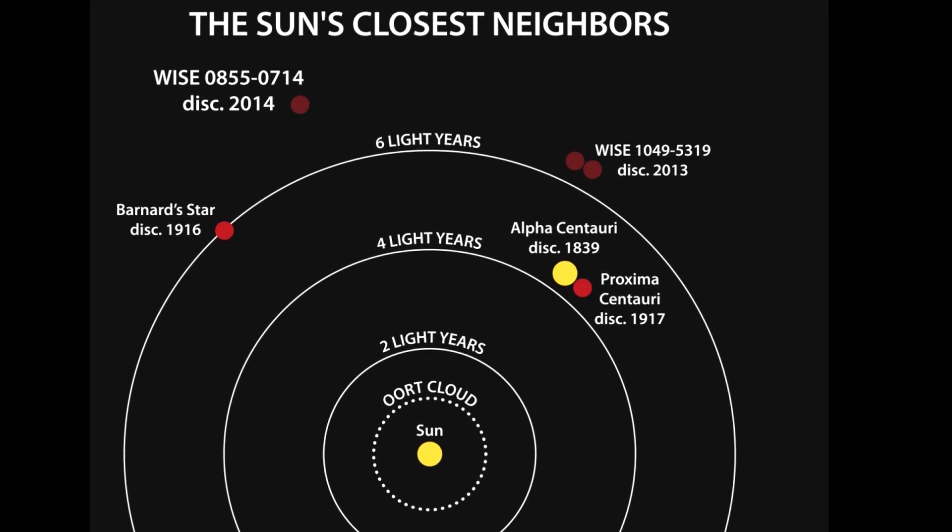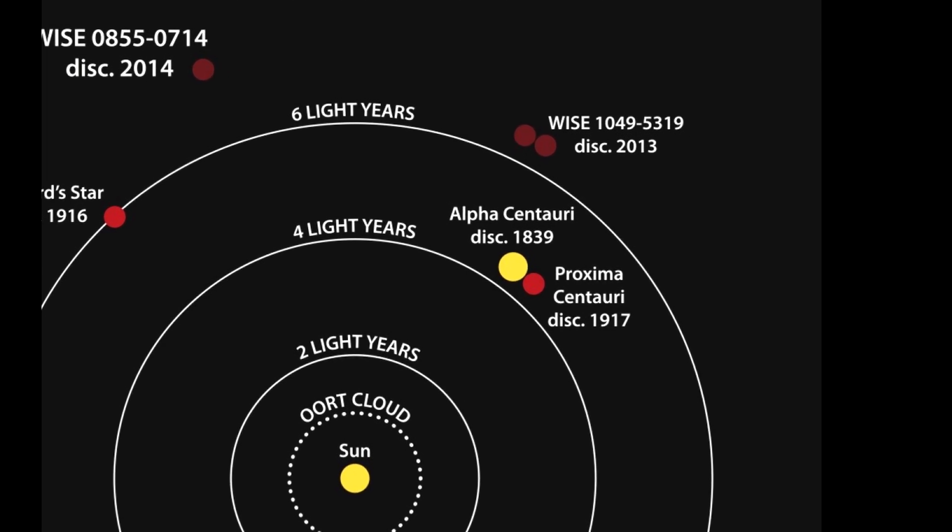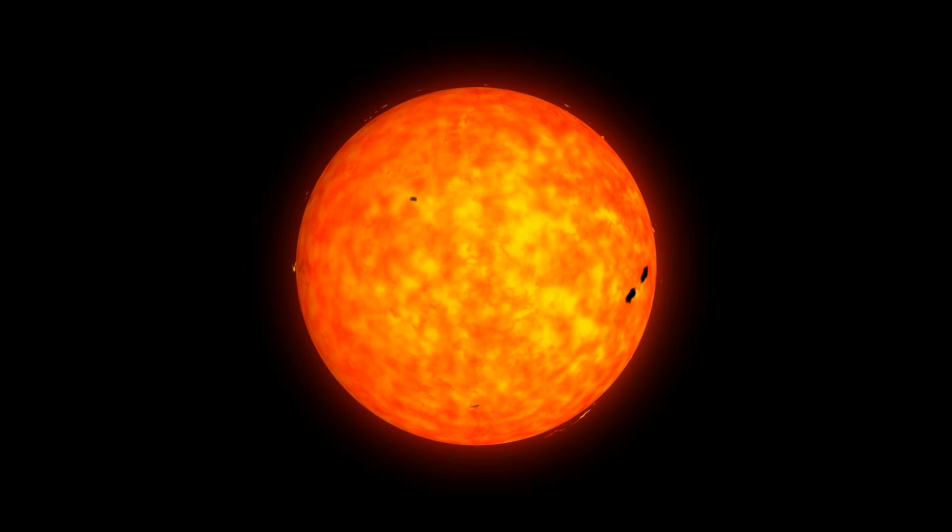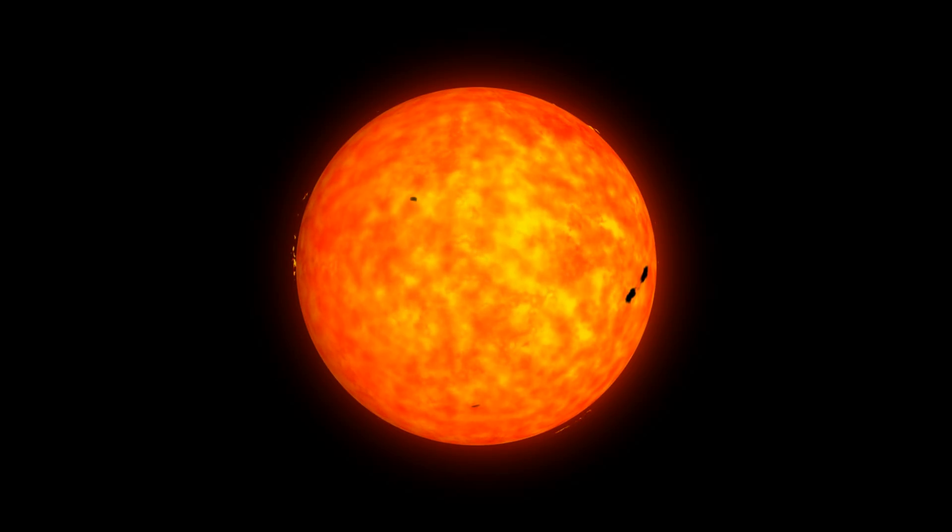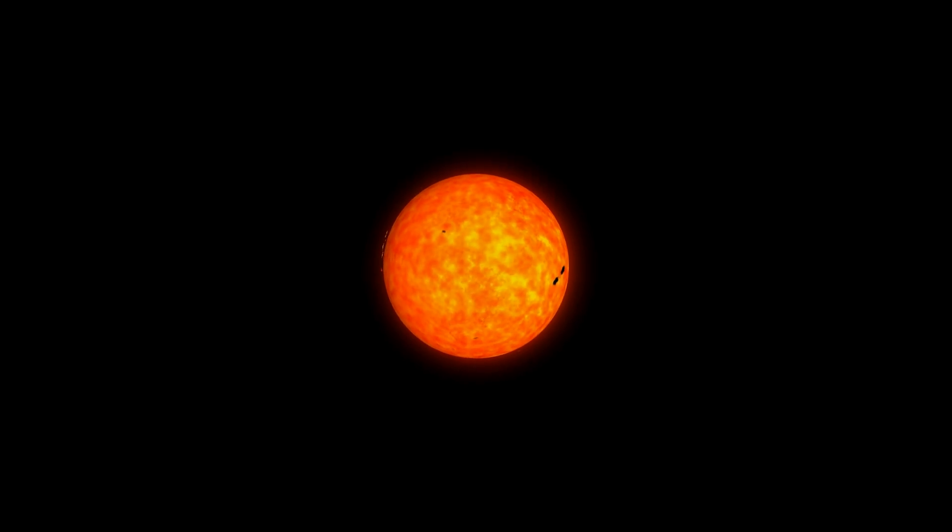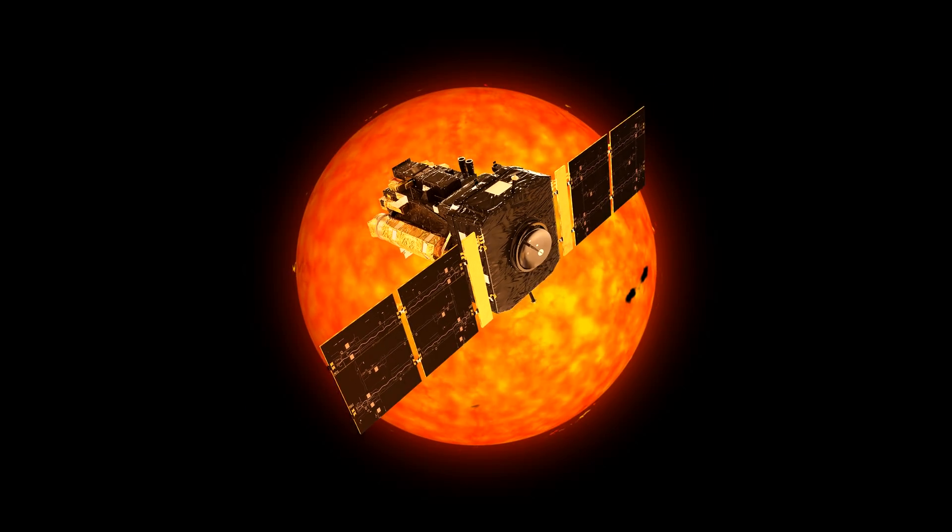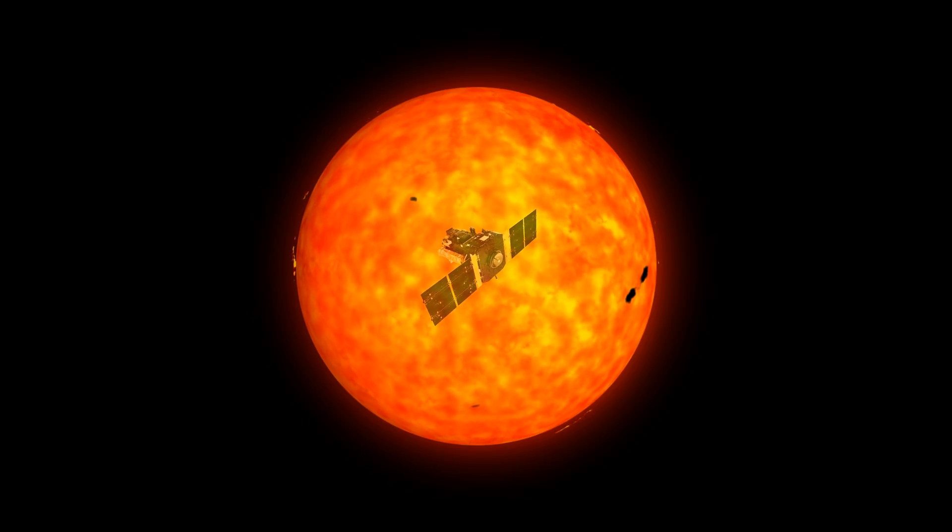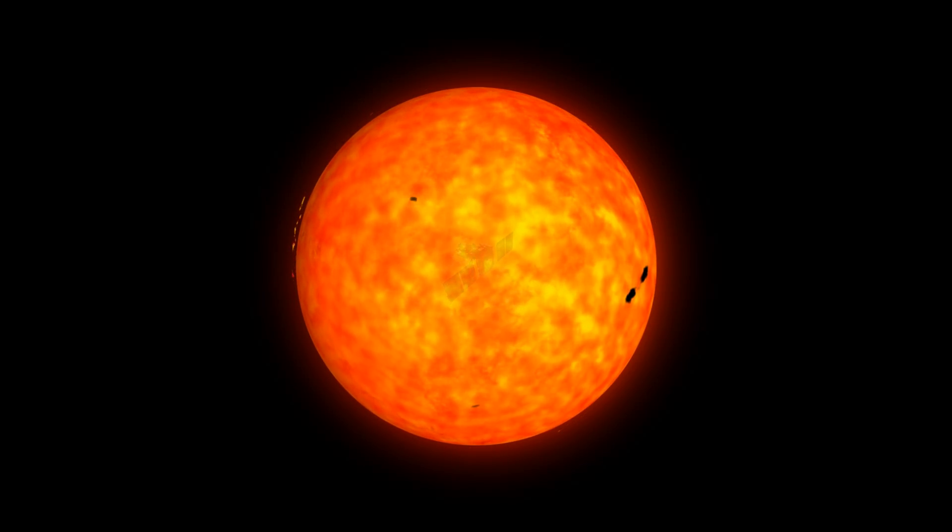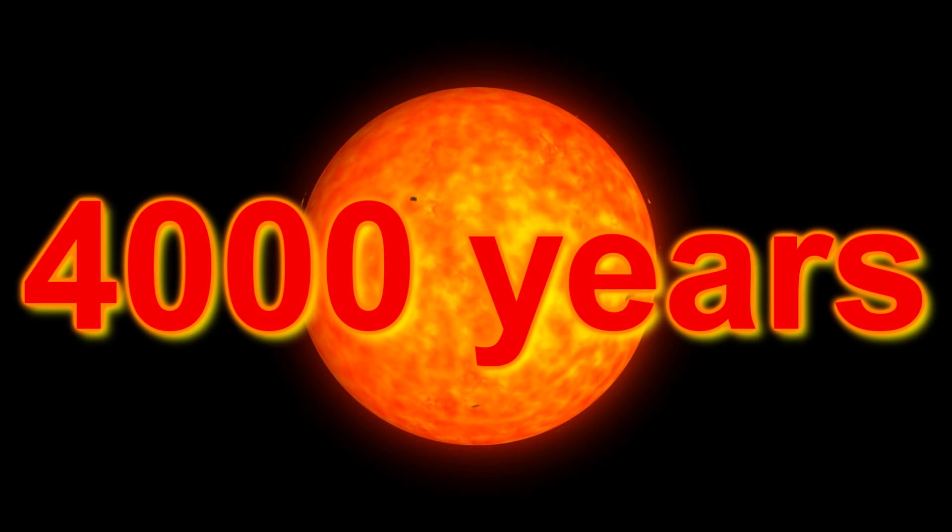The starting question is the nearest star to our sun, the third component of the trinary star system Alpha Centauri, Proxima Centauri. But with current space propulsion technology a journey to Proxima Centauri would take tens to hundreds of millennia. The fastest spacecraft ever, the Helios, went just over 70 km per second. Even at such incredible speeds it would take over 4000 years to reach Proxima.